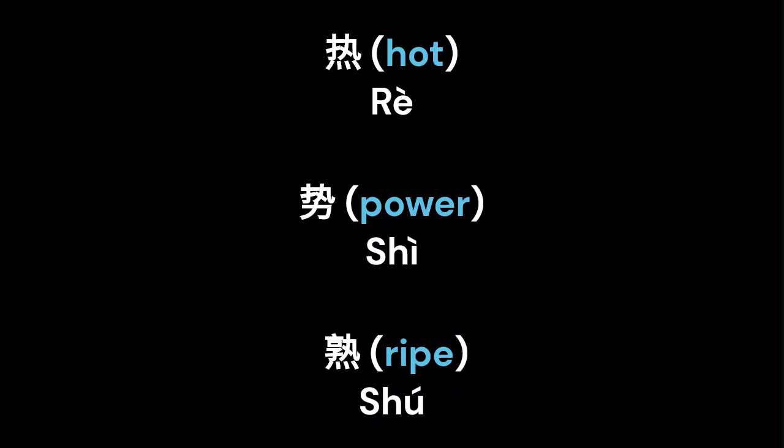丸 can be found in words such as hot, 热, power, 湿, and ripe, 熟. This makes it an important character to learn.